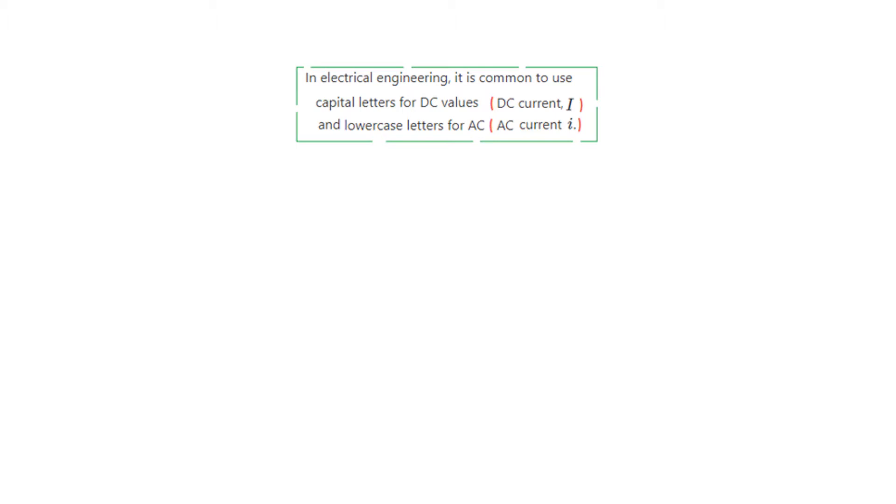Just to recap, in electrical engineering it is common to use capital letters for DC values, like DC current written capital I, and lowercase letters for AC value. AC current is written as small i or lowercase i.